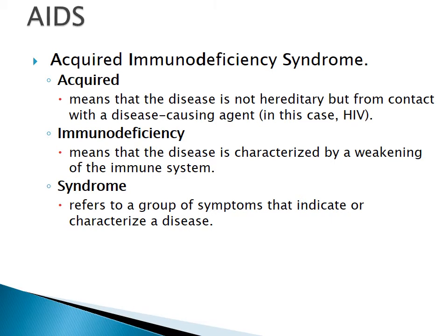AIDS is Acquired Immunodeficiency Syndrome. The word 'syndrome' refers to a group of symptoms that indicate or characterize a disease. There is no single specific symptom that means you have AIDS — it's a group of symptoms that vary depending on the individual and where that individual lives.